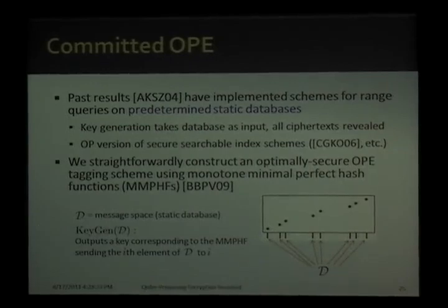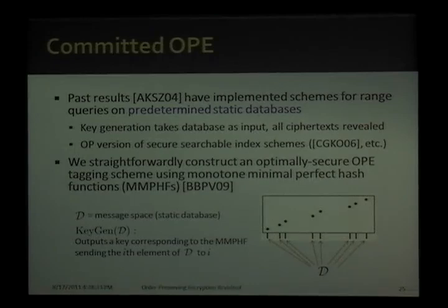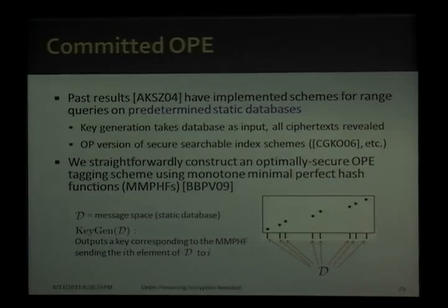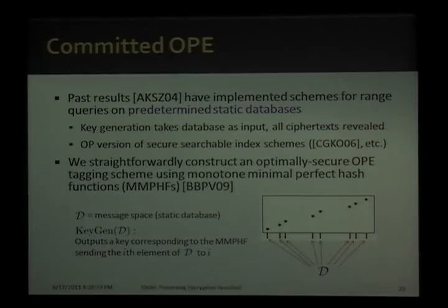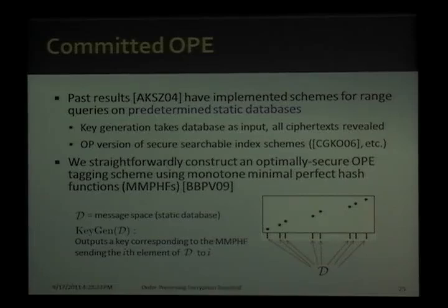Our second variant is what we call committed OPE. Some past results have implemented schemes for range queries on predetermined static databases, where key generation is allowed to take the database as input and all ciphertexts are revealed. This may seem naive, but it's just the order-preserving version of secure searchable index schemes, which have been widely studied in the literature. In our paper, we straightforwardly construct an optimally secure OPE scheme for this setting. It's very easy to do if you have a constant-time function that sends the i-th element of your database to index i — functions called monotone minimal perfect hash functions, which were recently studied and have near-space-optimal complexity. So it seems like a reasonable solution.